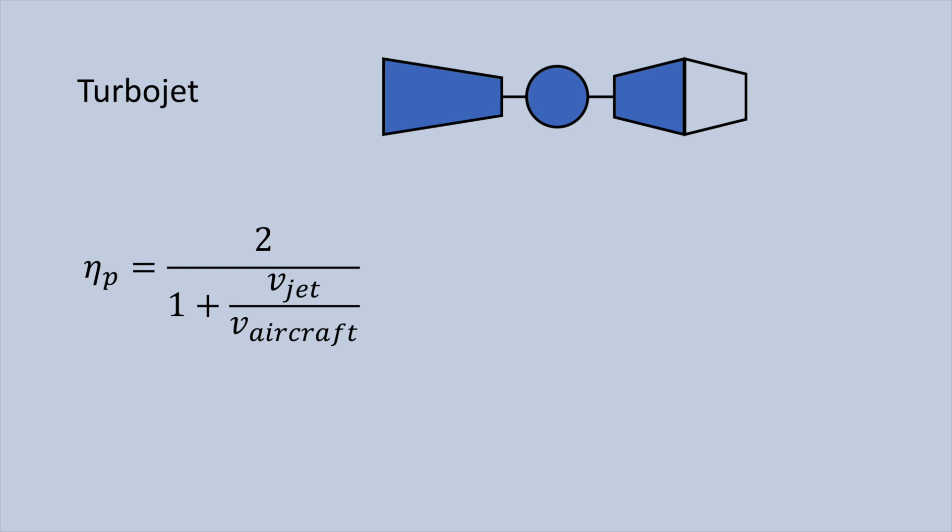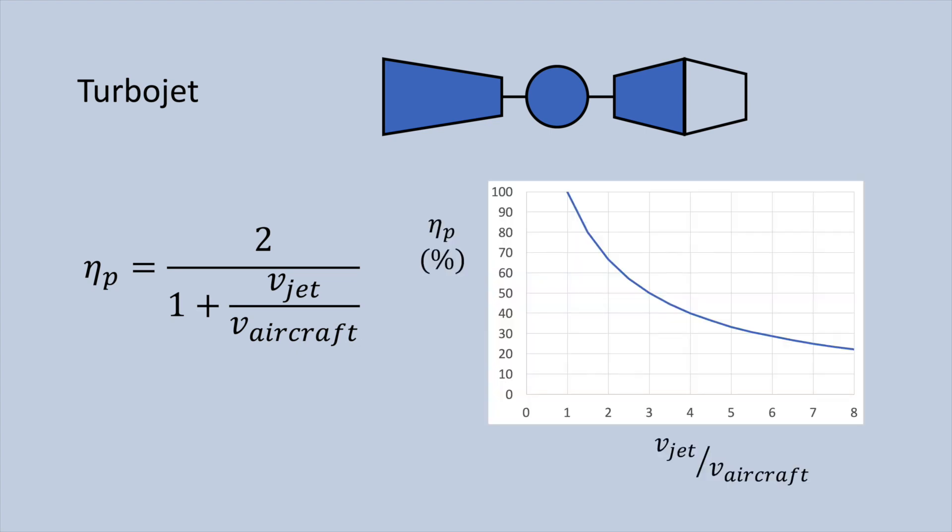You can see from the equation for propulsive efficiency for an air breathing engine that this is a function of the ratio of velocity of the jet produced by the engine to the velocity of the aircraft. To visualize this relationship, we can look at a plot of the propulsive efficiency to this ratio. You can see that the closer the velocity of the jet is to the velocity of the aircraft, the higher this efficiency.